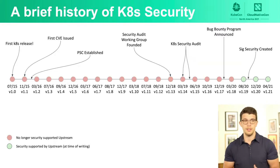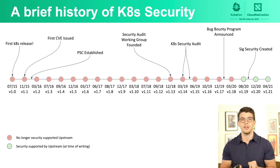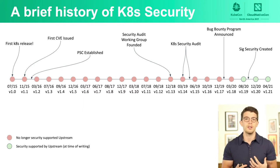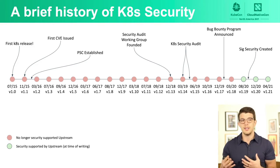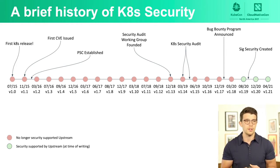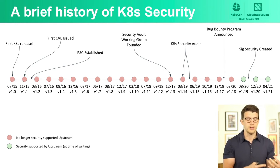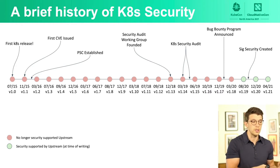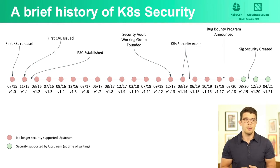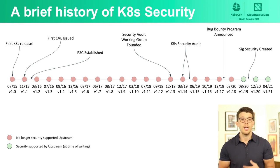Looking at the history of the Kubernetes project, it was released in version 1 in July 2015, followed in November 2015 by the first Kubernetes CVE, which allowed remote attackers to read arbitrary pod logs via container name manipulation. In January 2016, the Product Security Committee was established — before that, vulnerabilities were reported directly to Google. In December 2018, the Security Audit Working Group was founded to identify vendors who can provide security audits for the Kubernetes project. In January 2020, the bug bounty program started, funded by the CNCF. And in August 2020, the Kubernetes SIG for security was created.